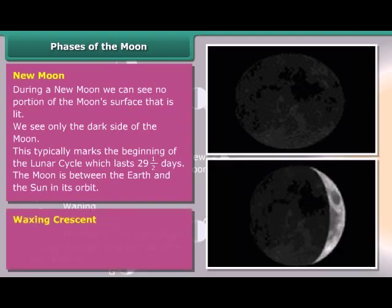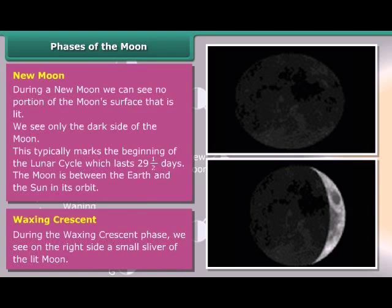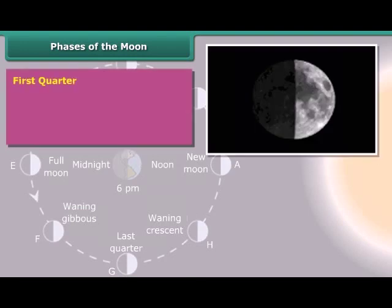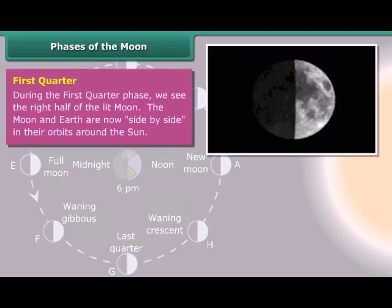Waxing Crescent: During the waxing crescent phase, we see on the right side a small sliver of the lit Moon. First Quarter: During the first quarter phase, we see the right half of the lit Moon. The Moon and Earth are now side by side in their orbits around the Sun.